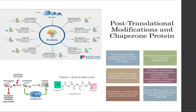Now let's talk a little bit about covalent alterations. Essentially what happens here is that certain groups are added onto the protein once the protein is made. Different types of covalent alterations include phosphorylation, glycosylation, hydroxylation, methylation, acetylation, and ubiquitination. Hydroxylation adds a hydroxyl group, methylation adds a methyl group, acetylation adds an acetyl group, ubiquitination adds a ubiquitin, glycosylation adds a sugar, and phosphorylation adds a phosphate group.